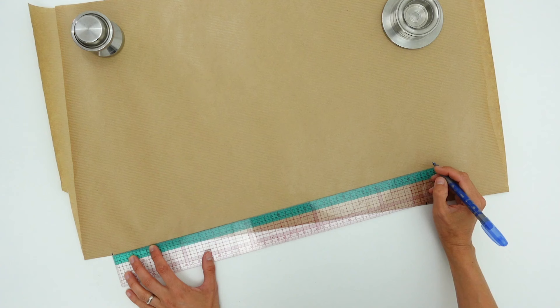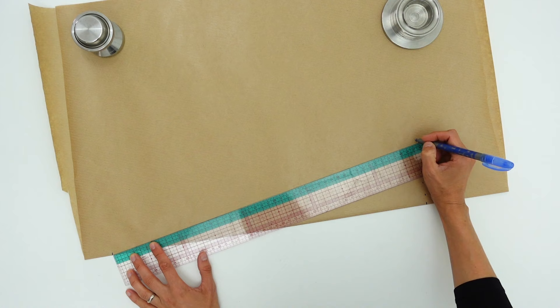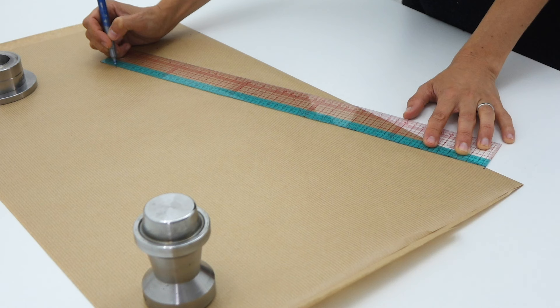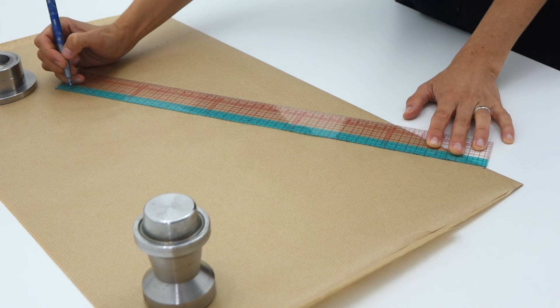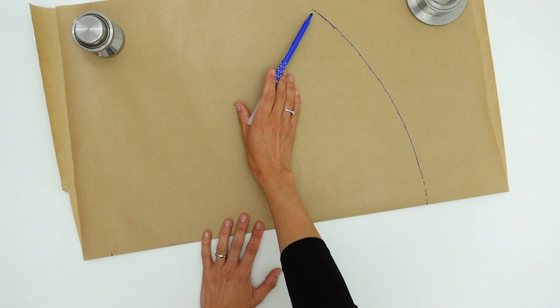Just like before, we are going to pivot our ruler so as to obtain the start of a circle. I am quickly going to retrace it by hand with a sharpie for you to see better. So there it is.